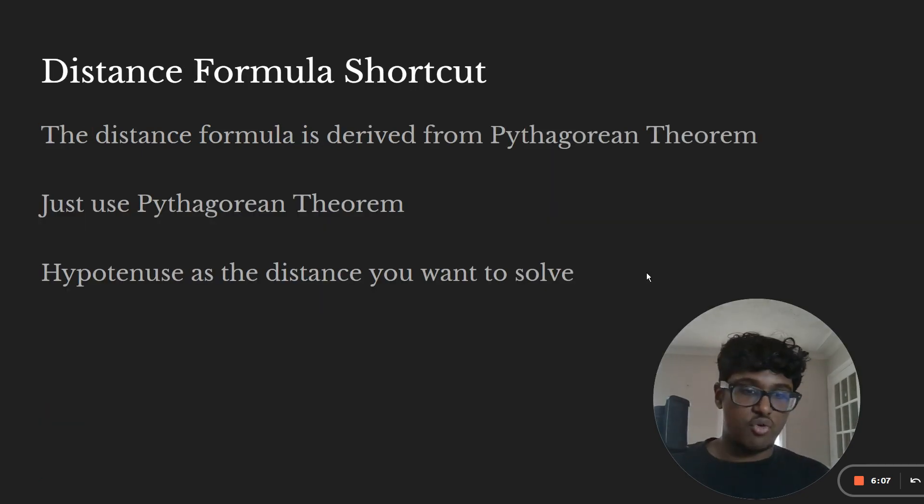Now the distance formula shortcut. You don't have to memorize the distance formula. And I think it's really dumb to, because the distance formula is derived from the Pythagorean theorem and everybody knows A squared plus B squared equals C squared. It's one of the most famous math formulas you could say. So literally just use the Pythagorean theorem. Figure out what the distance is by having that distance be the hypotenuse and then just making the triangle and solving for the hypotenuse.